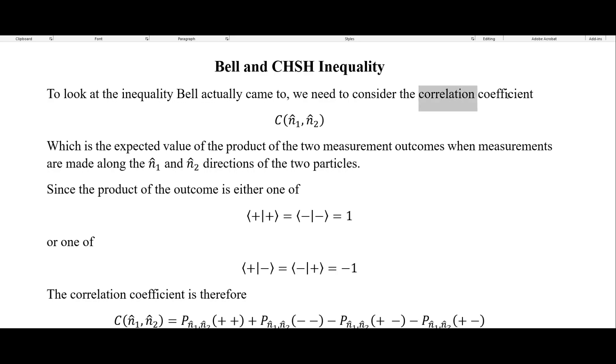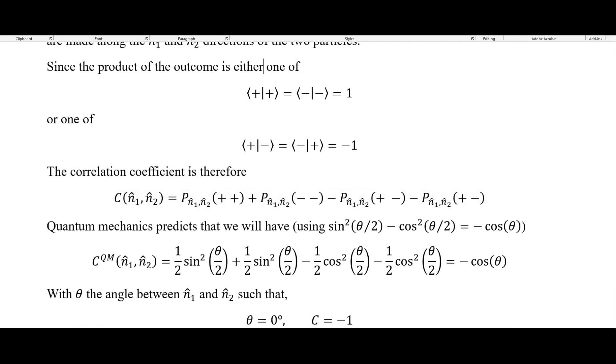To look at the inequality Bell actually came to, we need to consider what's called the correlation coefficient, which we will put like this with a C in our two directions here in parentheses. This is the expected value of the product of the two measurement outcomes when measurements are made along these directions of the two particles. Since the product of the outcome is either plus plus and minus minus, then we get one. And if they are opposites, then we get minus one. The correlation coefficient is therefore this right here. So these are our probabilities of getting spin up and spin down in each of these two directions.